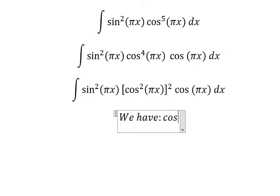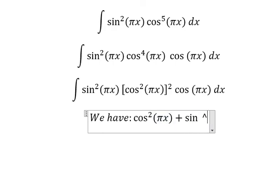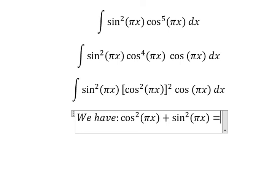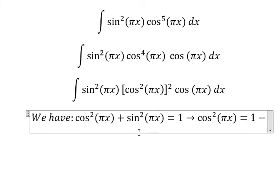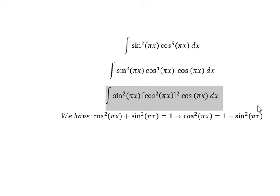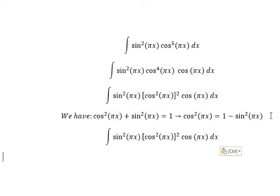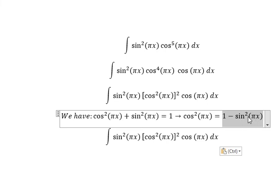We have the formula: cosine bx squared plus sine bx squared equals one. Because we have cosine bx squared in here, I will move this one to the right side, so we have cosine bx squared equals one minus sine bx squared.